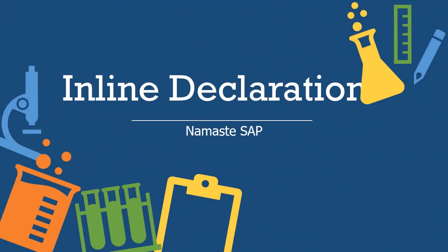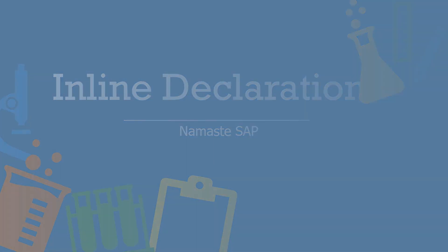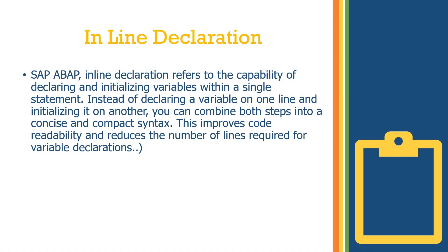Hello everyone. In this video we'll learn about inline declaration in SAP ABAP 7.4. In SAP ABAP, inline declaration refers to the capability of declaring and initializing variables within a single statement, instead of declaring a variable on one line and initializing it on another. You can combine both steps into a compact statement. This improves code readability and reduces the number of lines required for variable declaration.